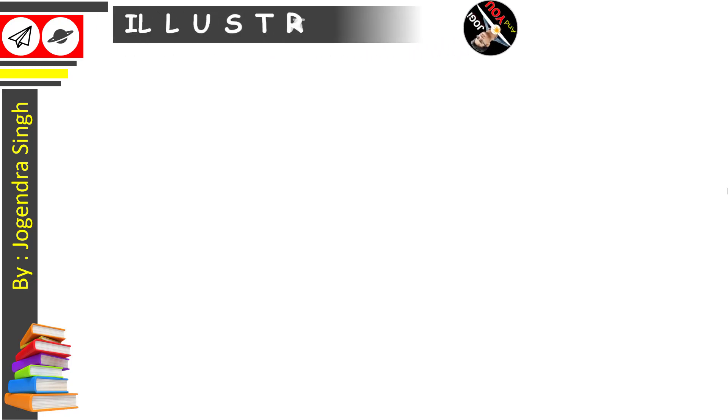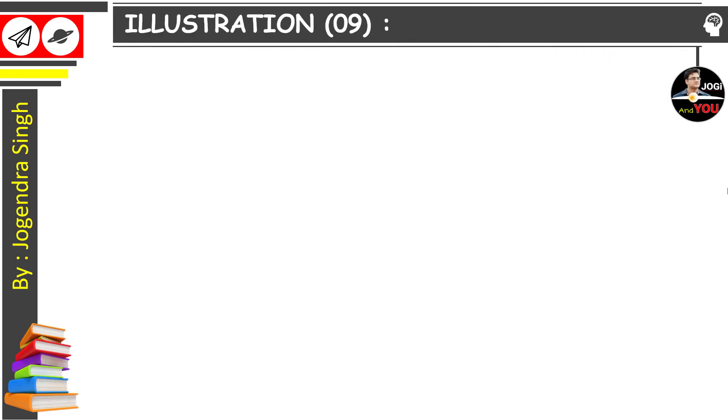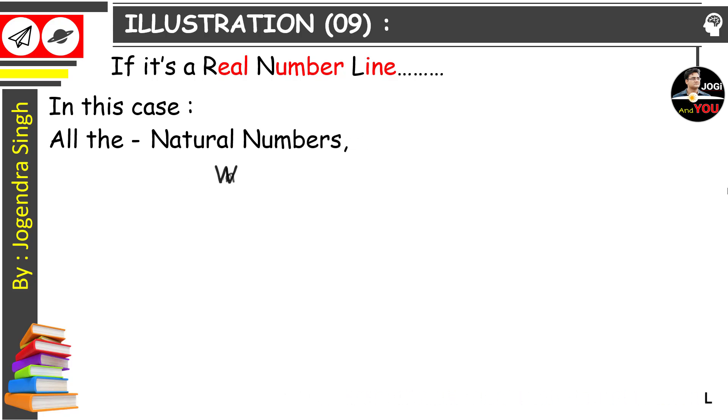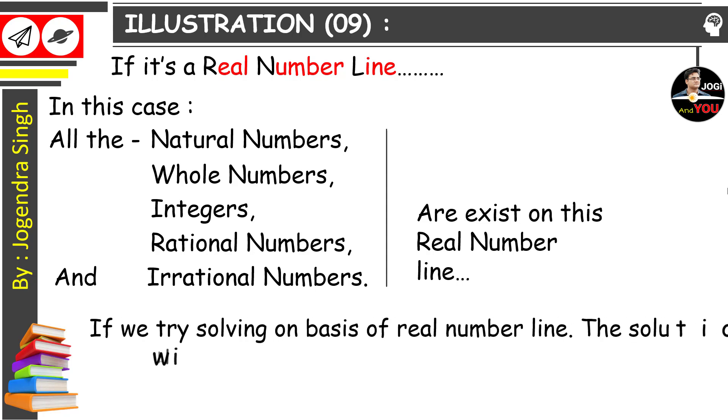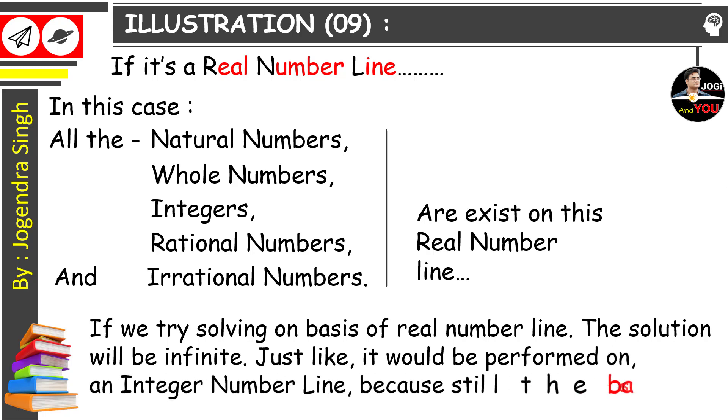Now illustration number 9 says if it's a real number line, in this case all the natural numbers, whole numbers, integers, rational numbers and irrational numbers exist on this real number line. And if we try solving on basis of real number line, the solution will be infinite, just like it would be performed on an integer number line, because still the base is 10.